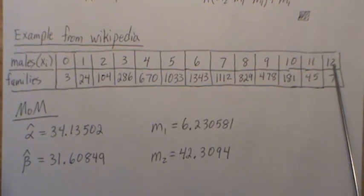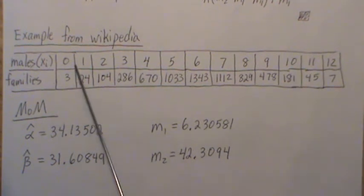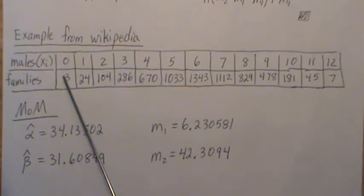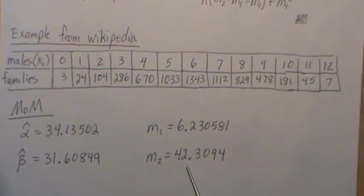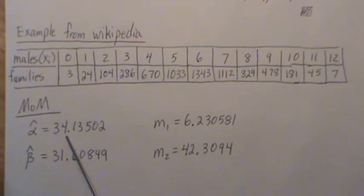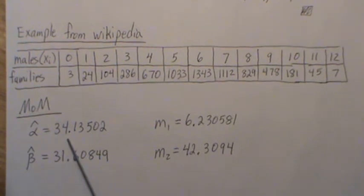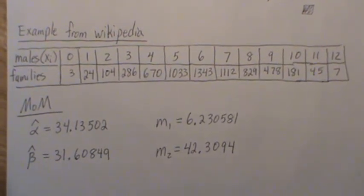And so this is the number of families they looked at. And then of those, how many had 12 males? How many had 11? How many had 10? All the way to how many families had zero males? And there's only three of them. So from this, you can calculate the sample mean, the first moment, and then the second sample moment. And then these can be used to calculate the method of moments estimator for alpha and method of moments estimator for beta.